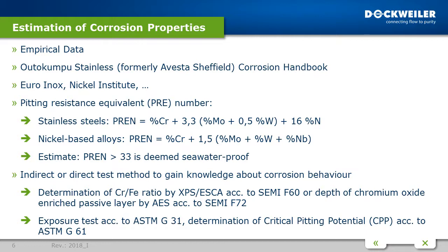Sometimes calculating PRE is sufficient, but we also need something testable, because when corrosion occurs in daily business, you need to find the defect or what happened in your production steps. Therefore, there are indirect and direct test methods to determine the corrosion behaviour of a defined batch or the influence of production steps.